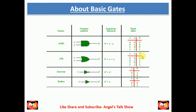This is the truth table of the OR gate, where on the left-hand side we place input values and on the right-hand side we get the output value. When both inputs in the OR gate are low or false, the output will be false. If any one of the inputs or both inputs are 1, the output of OR gate will always be 1.